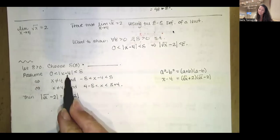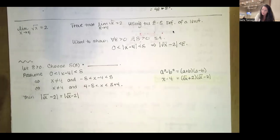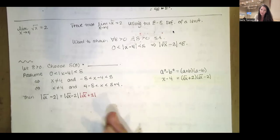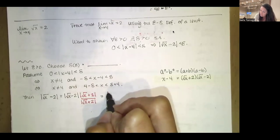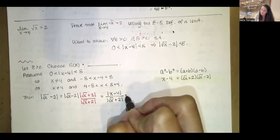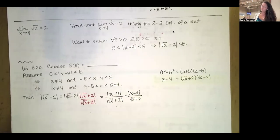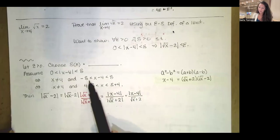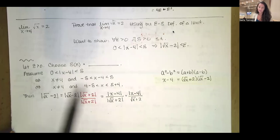Since I'm trying to relate that expression to x minus four, I see I need to multiply the absolute value of the square root of x minus two by the absolute value of the square root of x plus two. To keep the value unchanged, I also divide by that same factor — multiplying by a well-chosen one. The numerator then becomes the absolute value of x minus four, and the denominator is the absolute value of the square root of x plus two, which is always positive so the absolute value is not strictly needed.